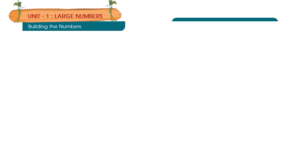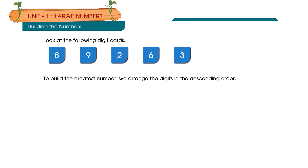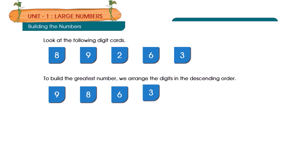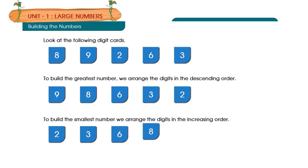Building the number. Look at the following digit cards: 8, 9, 2, 6, 3. To build the greatest number, arrange the digits in descending order: 98,632. To build the smallest number, arrange the digits in ascending order: 23,689.